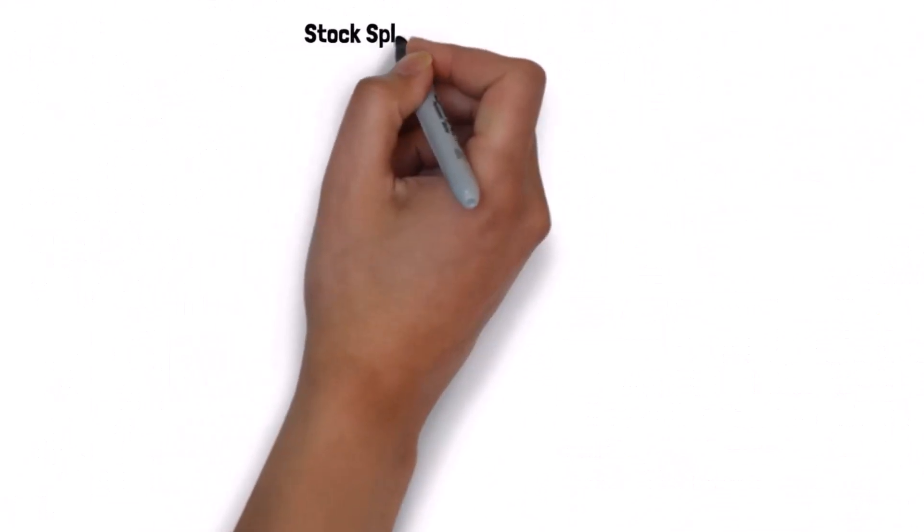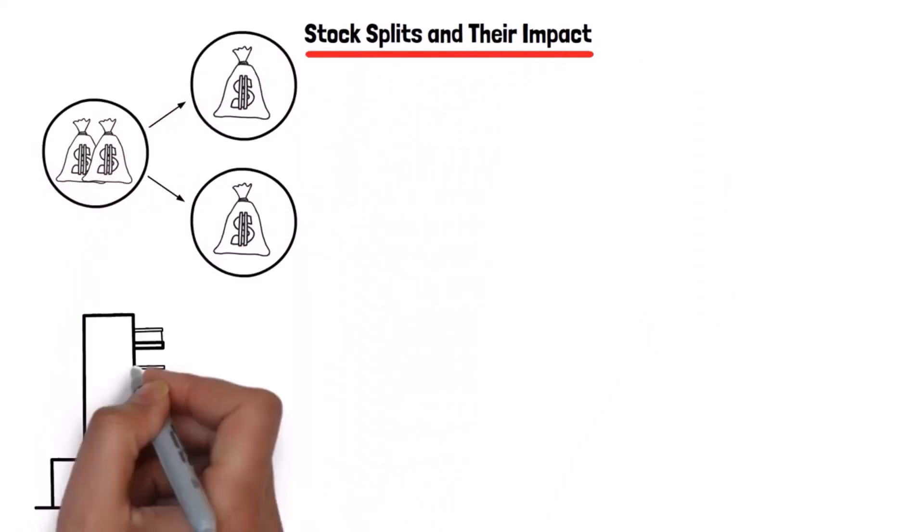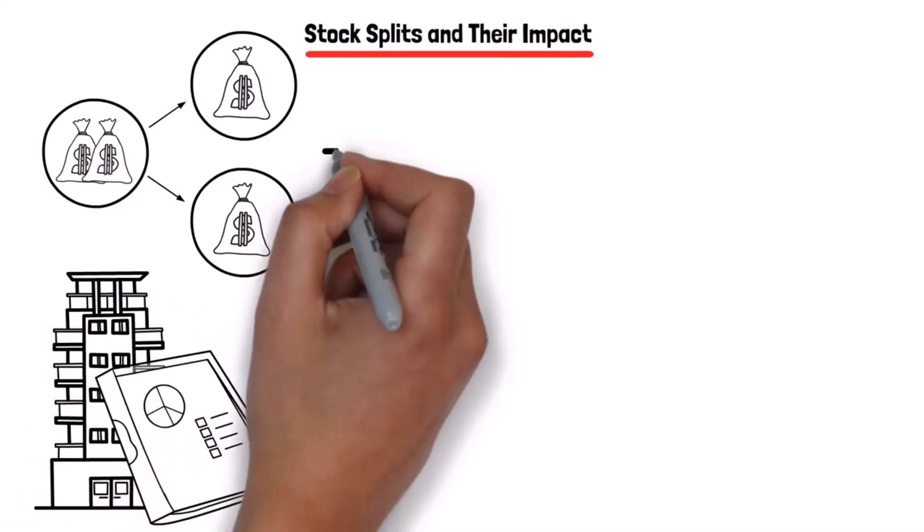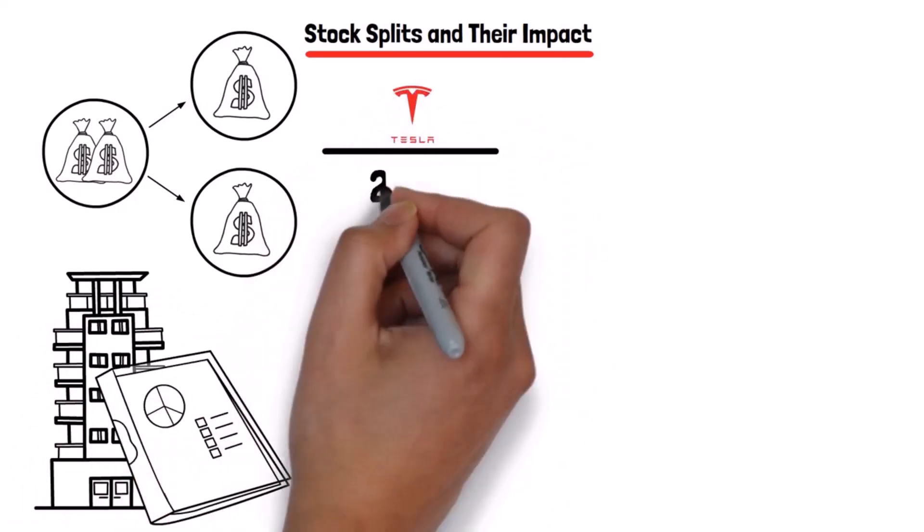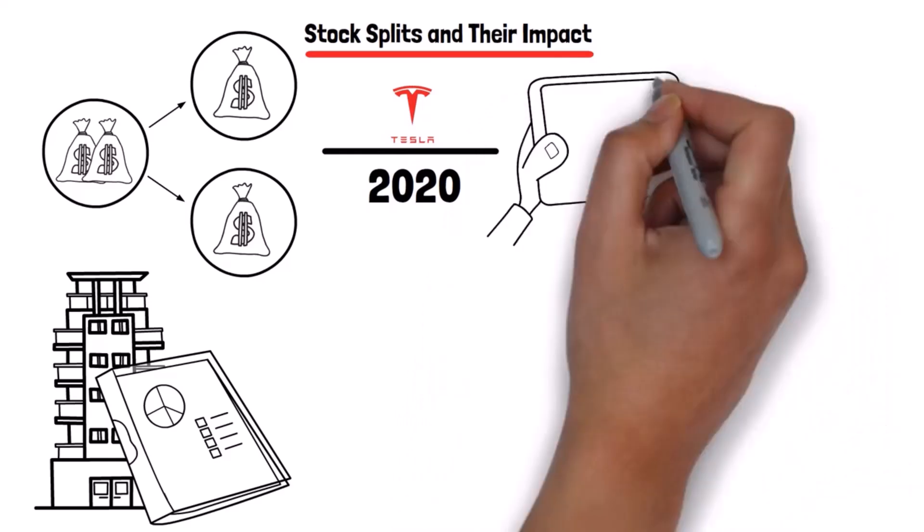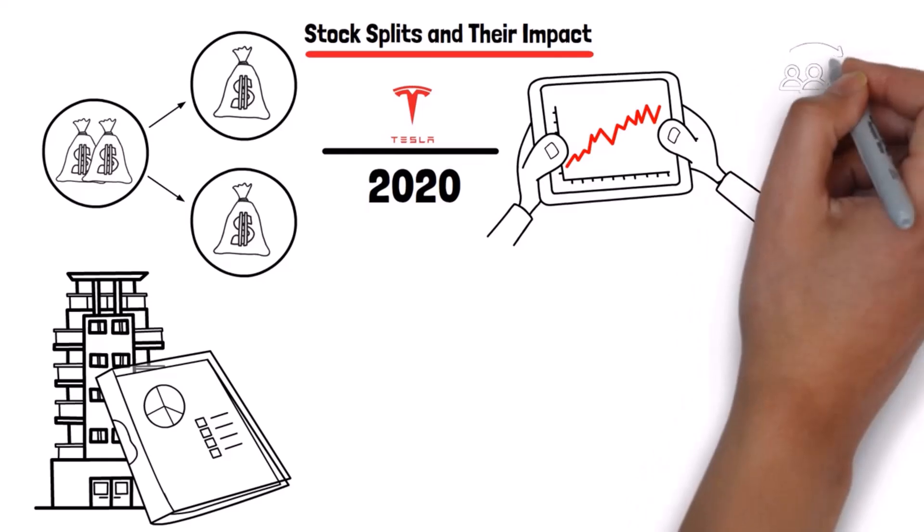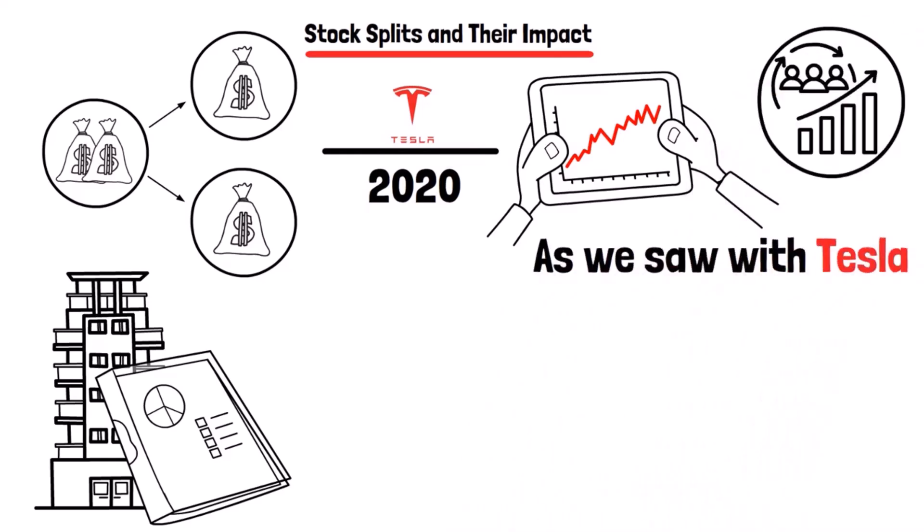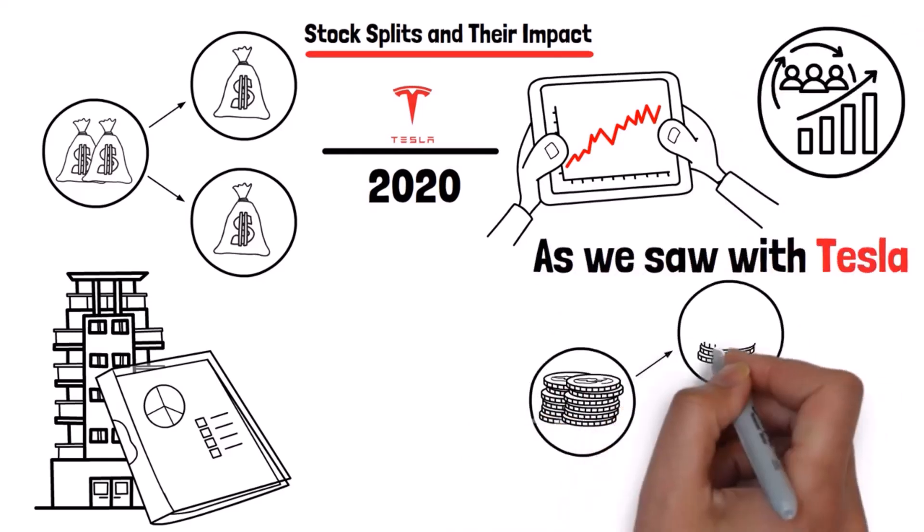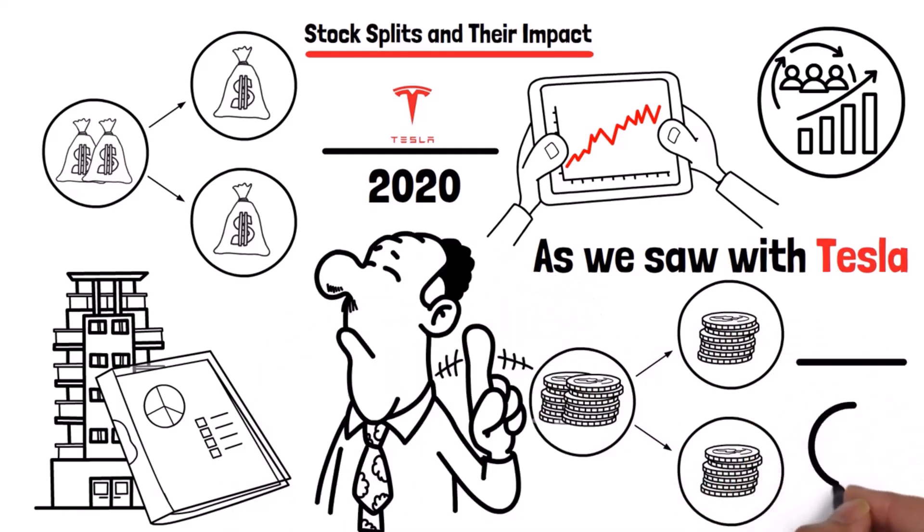Stock splits and their impact. Let's dive deeper into stock splits and their impact. A stock split can be seen as a sign of confidence from a company. When Tesla announced its first split in 2020, the stock price surged as it became more accessible to everyday investors. This increased demand can drive up the price, as we saw with Tesla. However, it's crucial to understand that a split doesn't change the underlying value of the company. It's more about market perception.